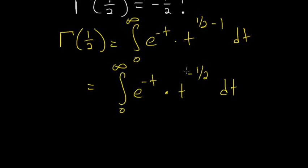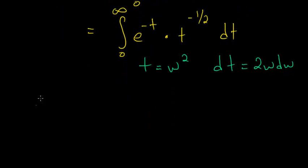So notice now we just have minus one-half here. One way to evaluate this is to set t equal to w squared. And from here dt will just be two w dw. So we just have to make these substitutions.